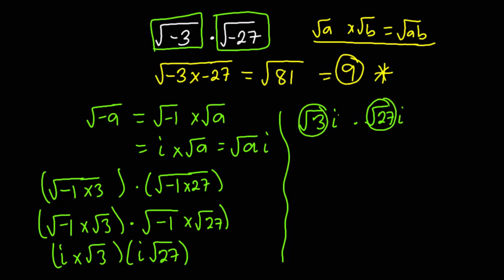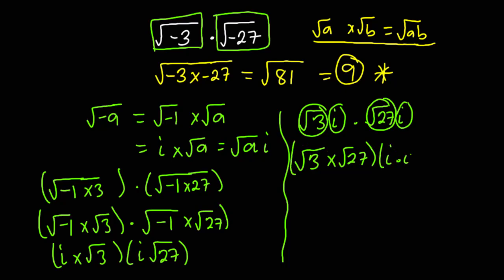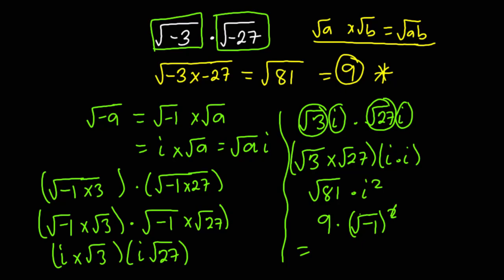The i terms multiply together and the surd terms multiply together: √3 × √27 × i × i, which gives us √81 × i². Now √81 = 9, and i² = (√(-1))² = -1. So we have 9 × i² = 9 × (-1).